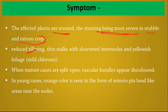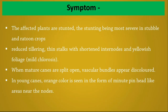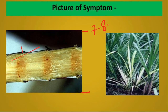Raton stunting disease symptoms: reduced tillering, thin stock with shortened internodes and yellowish foliage. When mature canes are split open, vascular bundles appear discolored. In young canes, orange color is seen in the form of minute pinhead-like areas near the node. If the normal plant height is 7 to 8 feet, infected plant height is much lower. This disease is more severe in the ratoon crop — when the main crop is harvested and cut stems regrow to form a new crop, that is the ratoon crop.